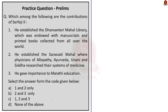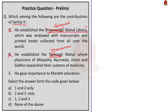Now let us solve this question. Three statements about Sarfoji II are given. Statement one — he established the Dhanvantri Mahal library endowed with manuscripts and printed books — is incorrect; the library was called Saraswati Mahal, not Dhanvantri. Statement two — he established the Saraswati Mahal where physicians researched medicine — is also incorrect; it was the Dhanvantri Mahal that was for research in medicine, while Saraswati Mahal is the library. Statement three — he gave importance to Marathi education — is incorrect; from our discussion, he gave importance to Tamil education. So all three statements are wrong and the correct answer is option D — none of the above.